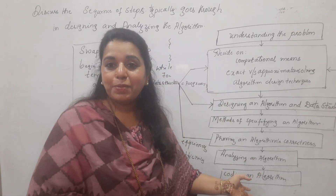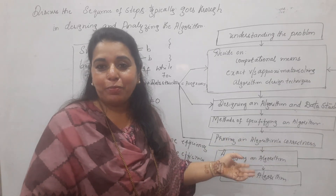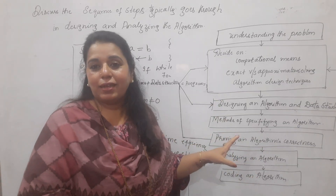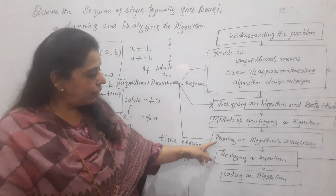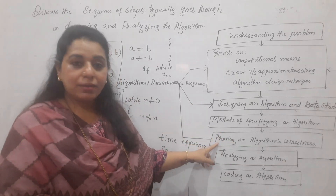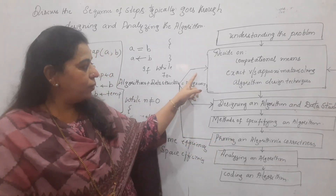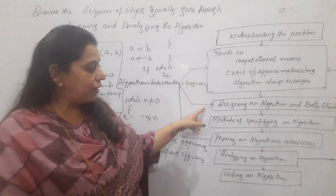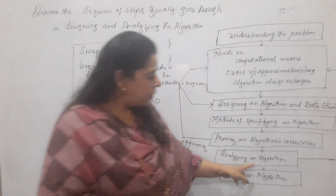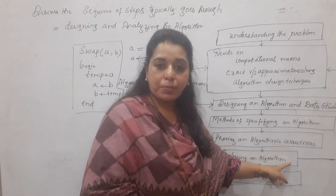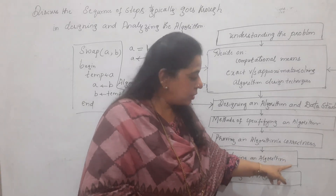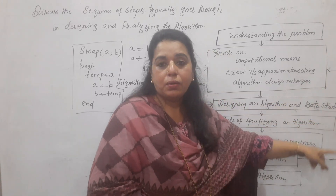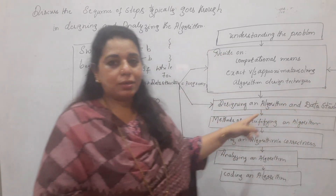All steps are important in this process. Whenever an algorithm's correctness is not proved, you go back and reconsider the earlier design steps. Whenever you cannot achieve the desired performance, you again go back to those steps to revise your approach.